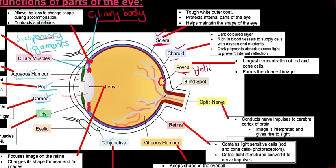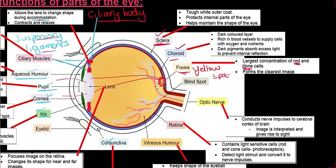The fovea, also known as the yellow spot, has the largest concentration of rod and cone cells in the eye, and because of this it forms the clearest image. Rod cells contribute to black and white vision and assist with night vision, while cone cells provide color vision — remember: C for cone, C for color. Humans have more cone cells than rod cells, whereas nocturnal predators like lions have more rod cells for night vision. Light is ultimately focused on this spot on the retina.